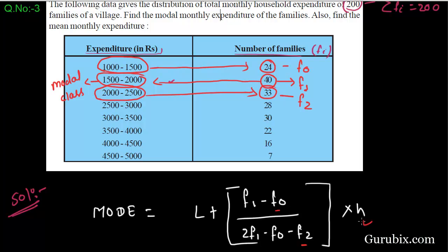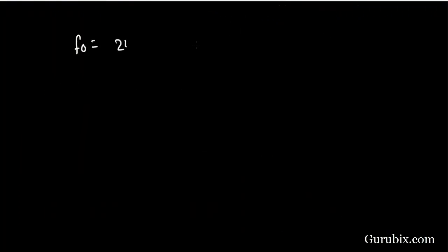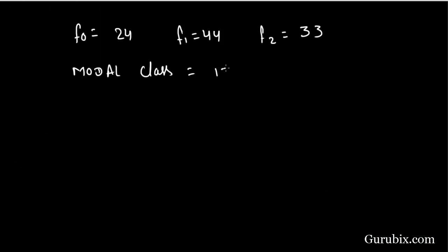Now we have to find H. H is our class size. We can see in this table that H is equal to the upper limit minus the lower limit of any interval, which equals 500. H is the same for all intervals. So: F0 is 24, F1 is 44, F2 is 33, H is equal to 500. L is the lower limit of the modal class. We can see here the lower limit is 1500, so L is equal to 1500.